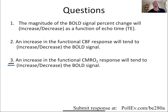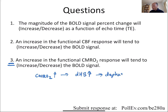Almost equal split — some people said it would increase, some said decrease. Let's work through this. If I have an increase in CMRO2, I'm using up more oxygen, so I'm going to have more deoxyhemoglobin. That means more dephasing, and the MR signal will tend to be decreased. All things being equal, the CMRO2 increase will tend to decrease the BOLD signal if that's the only thing going on.